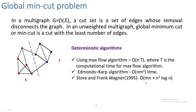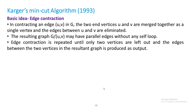The basic idea of Karger's algorithm is edge contraction. When contracting an edge, you merge its two endpoints, then delete the edges between those two endpoints. The resulting graph is denoted G/uv and can have parallel edges but no self-loops. The algorithm repeats edge contraction until only two vertices remain, then returns the number of edges between those two vertices as the min cut size.